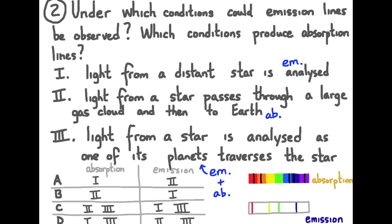some of that light interacts with the atmosphere making up that planet and giving us an absorption spectrum as well. So I would say three satisfies both absorption or emission spectra. Our answer here is C.